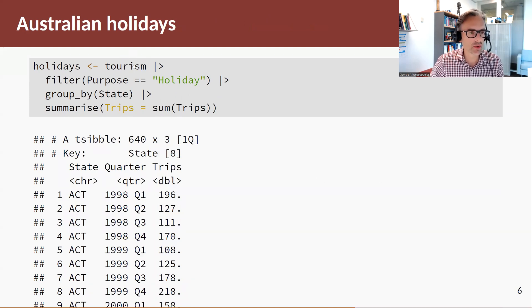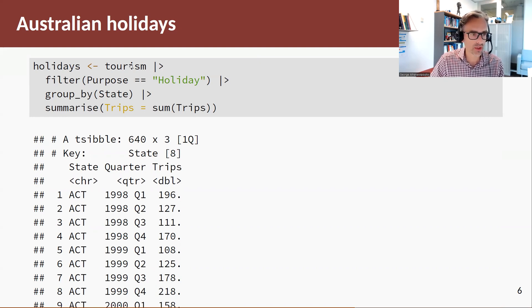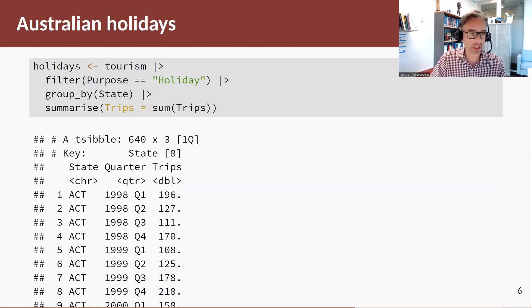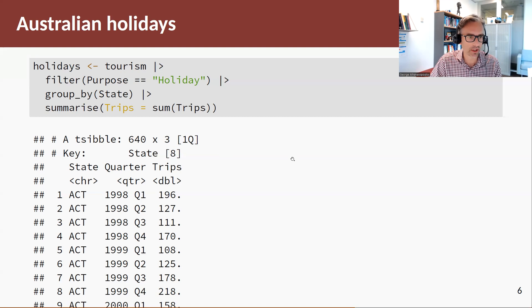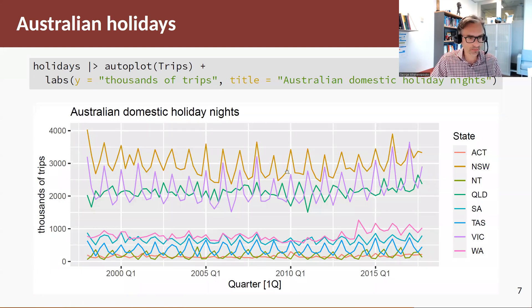Here's another example: the tourism dataset. This comes from consulting work done for Tourism Australia. We filter for holiday travel purpose only — people traveling around Australia for a holiday — then group by state and sum them up. We end up with a series showing domestic tourism flows for the eight states and territories of Australia.